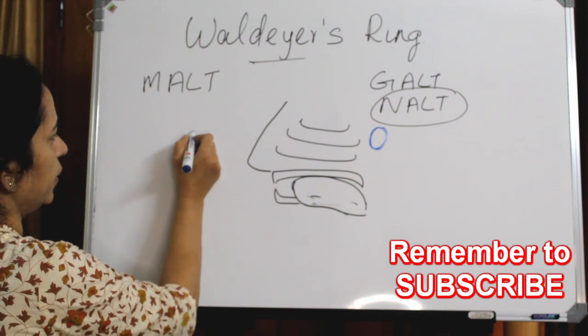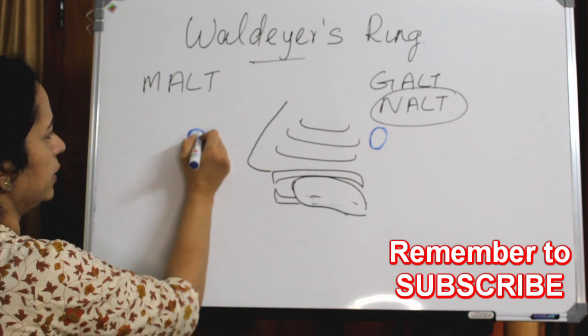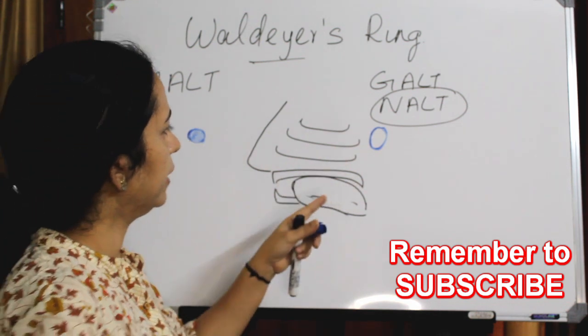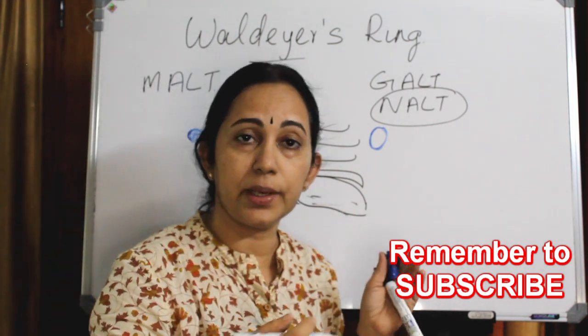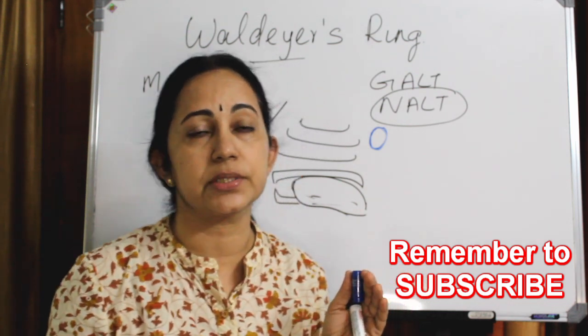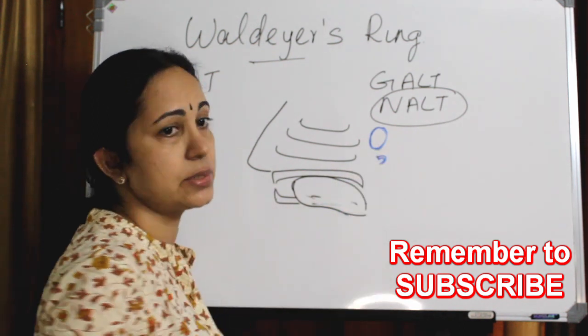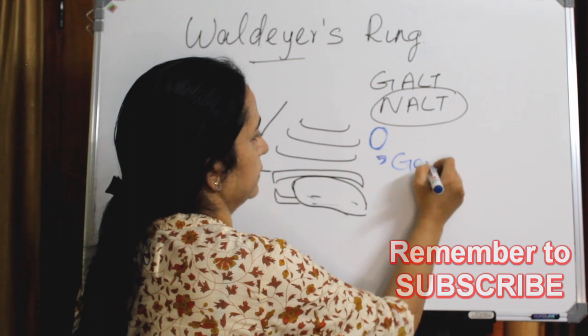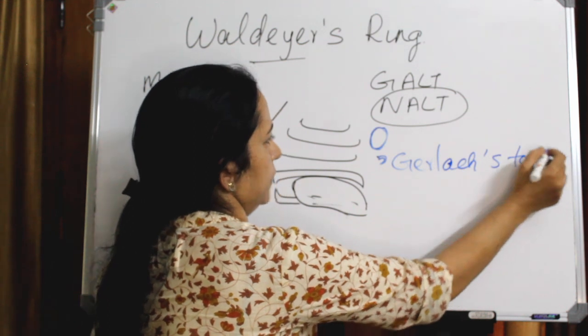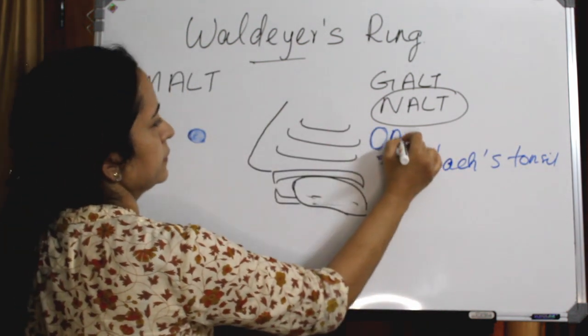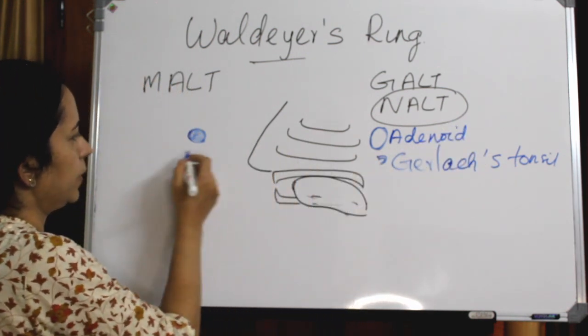So above there is adenoid tissue, or it is called the nasopharyngeal tonsil. And then on the lateral wall, lateral wall of nasopharynx at the tubal elevation, just behind the tubal elevation, you can see the tubal tonsils. It comes here laterally. The tubal tonsils are the Gerlach tonsil. So here this is adenoid, then the tubal tonsils on both sides.